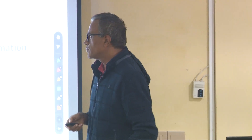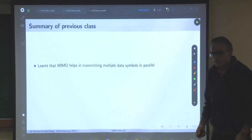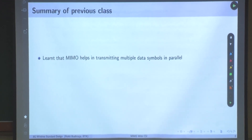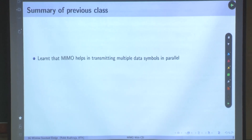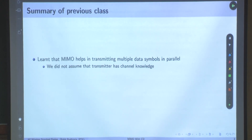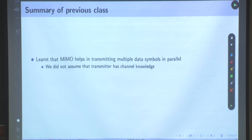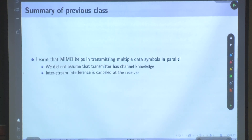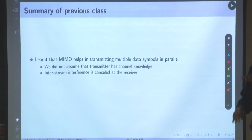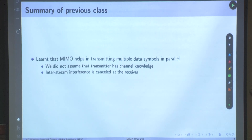Hello and welcome to the class. What we have been studying is MIMO transmission. What we learned in the last class was that it helps us in transmitting multiple data symbols in parallel on the same resource element. We did not assume that the transmitter has channel knowledge. Even with that, it is possible to exploit MIMO gains by transmitting multiple symbols in parallel. Inter-stream interference, which is the interference between two streams called layers in 5G, is cancelled at the receiver.